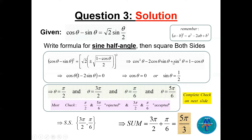Since cosine squared theta plus sine squared theta equals 1, that cancels. Bringing the remaining terms together and factoring, we get cosine theta times (1 minus 2 sine theta) equals zero. So cosine theta equals zero or sine theta equals one half. On [0, 2pi]: cosine theta equals zero gives theta equals pi/2 and 3pi/2; sine theta equals one half gives theta equals pi/6 and 5pi/6.